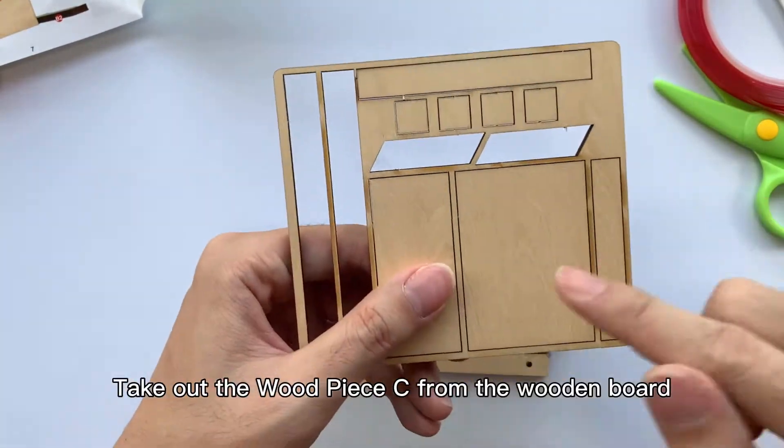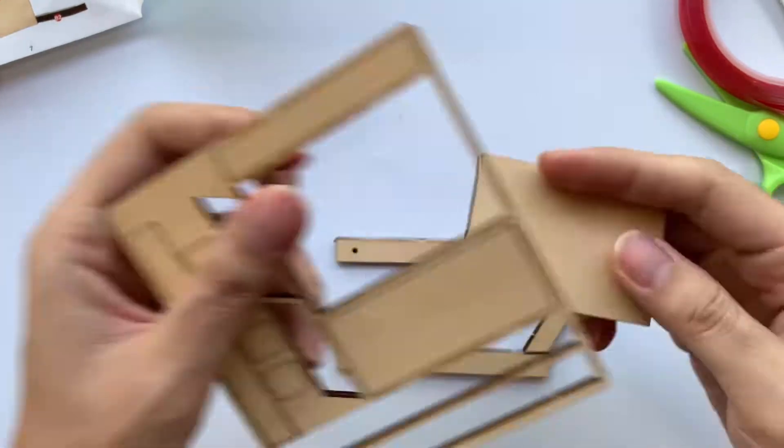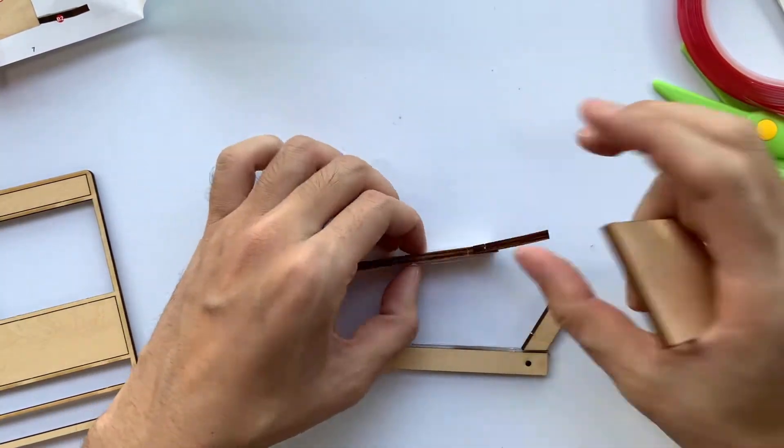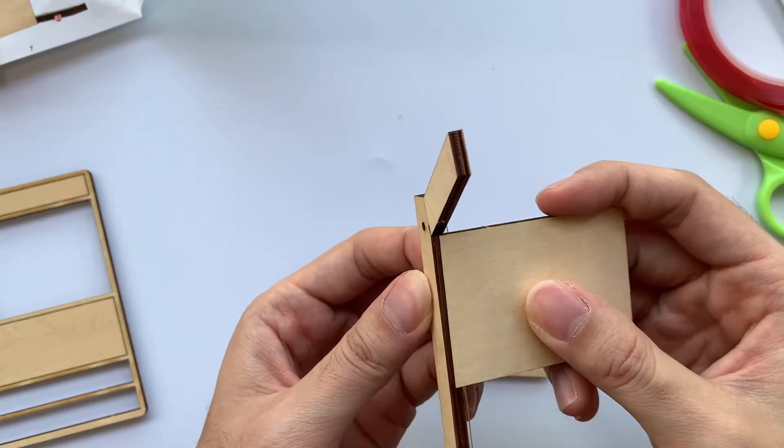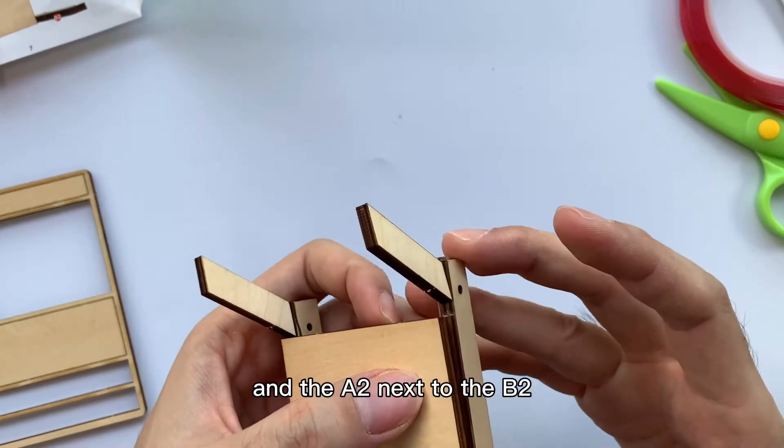Step 4: Take out the wood piece C from the wooden board and then stick it on the A1 next to the B1 and the A2.